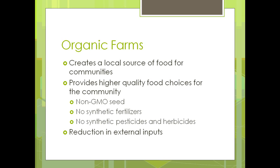Watering with irrigation is another external input organic farms avoid, along with using less fuel by not mechanizing with tractors and harvesting equipment. There is a distinction between organic and certified organic — certified organic means there's nothing synthetic, no nitrogen application or weed killer, within a mile to a mile and a half of where the organic farm is being grown. That's very hard to achieve sometimes, but that's the standard.